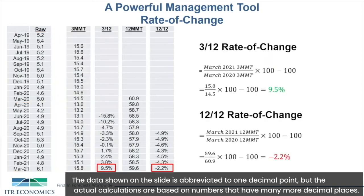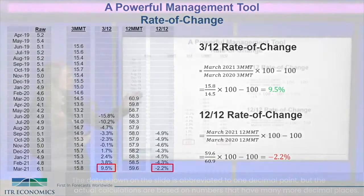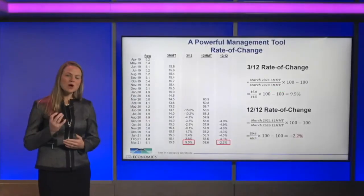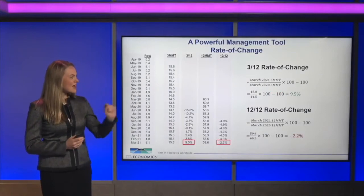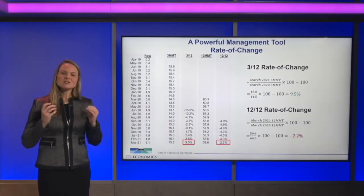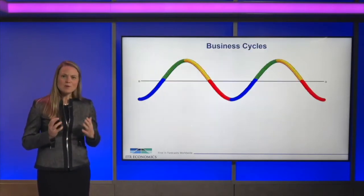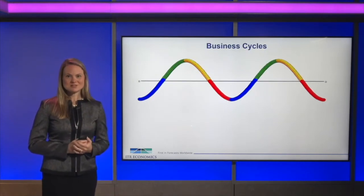Here are the formulas for those rates of change. Again, this is no high-level calculus — this is just simple addition and division. Put this into an Excel spreadsheet, and I really do encourage you to take this to your own business, because you'll get a lot of powerful information. Now, the 3-12 is interesting, but the 12-12 is probably where I spend more of my focus as an economist, because that 12-12 rate of change is where we determine where your company is in the business cycle.